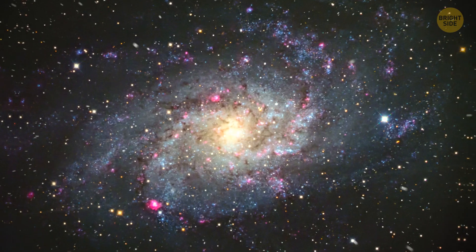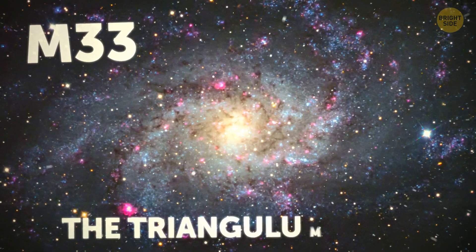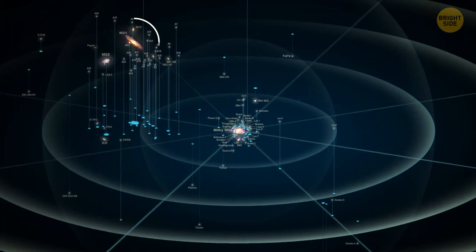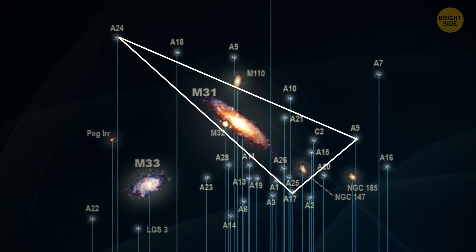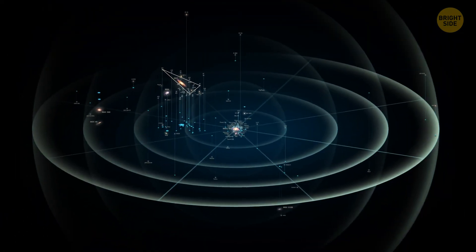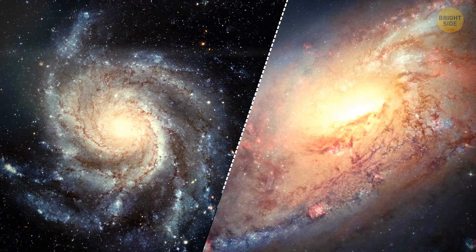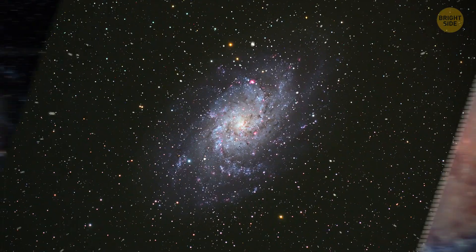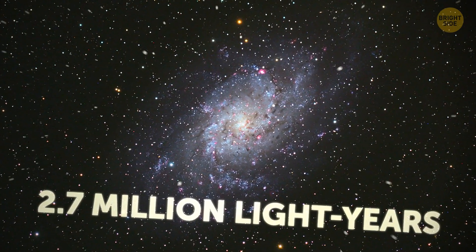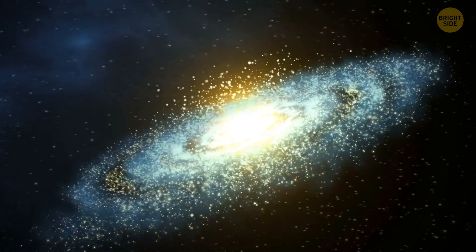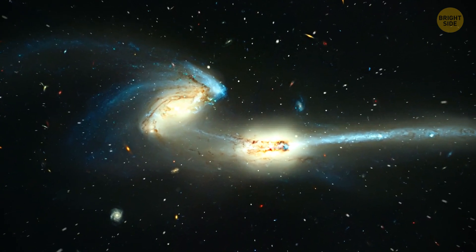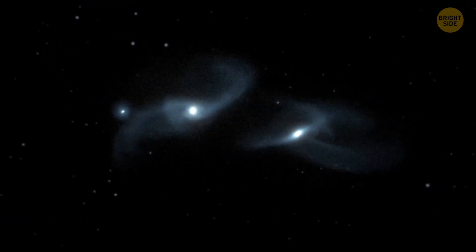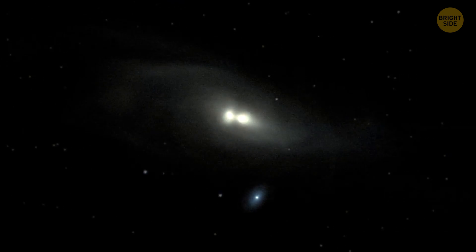And now, our final stop, M33, the Triangulum galaxy, the third and last spiral galaxy of our local group. Located in the small constellation of Triangulum, Latin for triangle, good guess, M33 is about half the size of the Milky Way. The Triangulum galaxy is 2.7 million light-years from Earth, but it is much closer to the Andromeda galaxy and moving towards it. If two spiral galaxies collide, it may alter the course of the Andromeda galaxy and prevent the predicted collision with the Milky Way. Well, let's hope so.